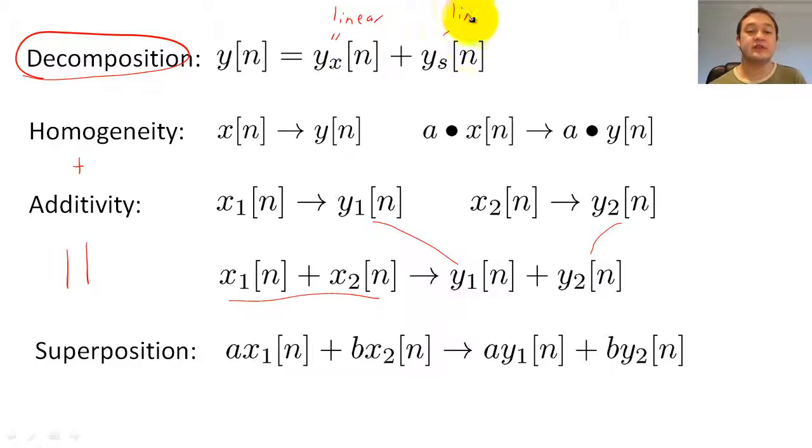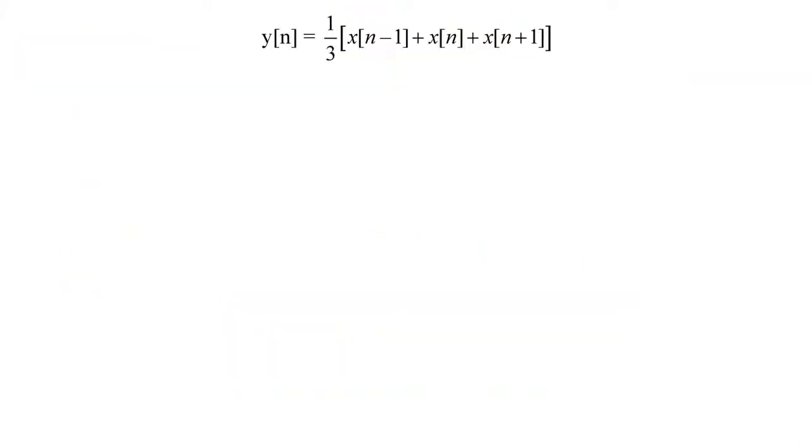Generally, zero state linearity is much more important and is therefore often called linearity. Here is an example of a linearity proof. Suppose we have a filter that averages the value of three samples to create y of n. To check for linearity, we need to see if the superposition property holds.